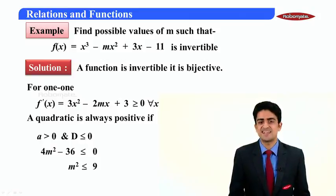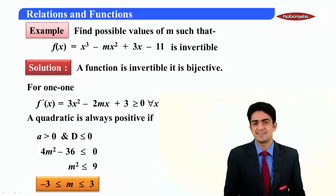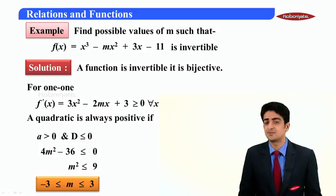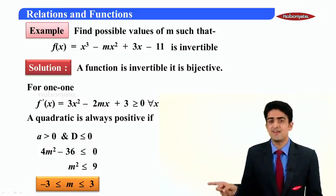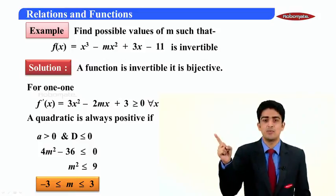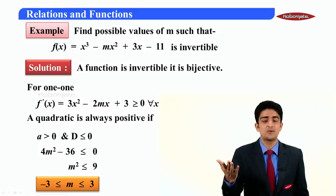We get m² ≤ 9, that is m lies between -3 to 3. So for these values of m it will be one-one. It is already onto being a cubic polynomial, so it is bijective and hence it is invertible.